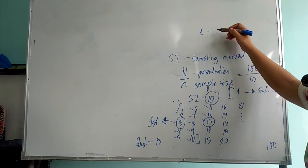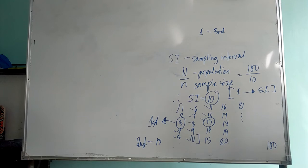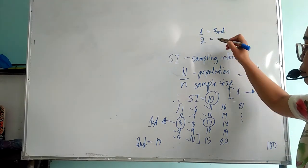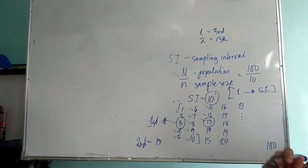So your first sample is the third in the list of your population, your second sample will be the 13th in the list of your population.